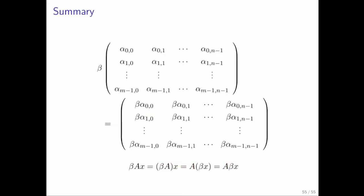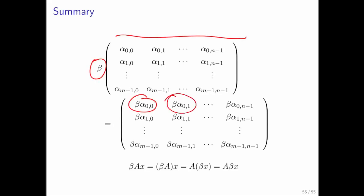In summary, taking a matrix and multiplying by a scalar simply means multiplying the individual elements by beta. And you can write beta times A times x, with or without parentheses, or move the scalar around — all of those end up being the same.